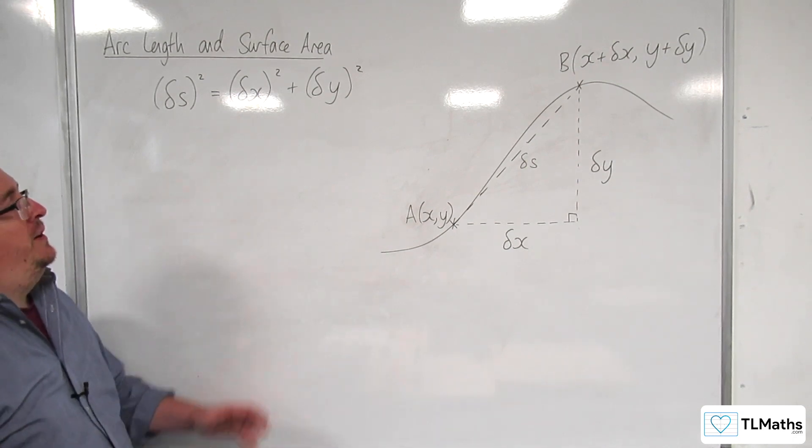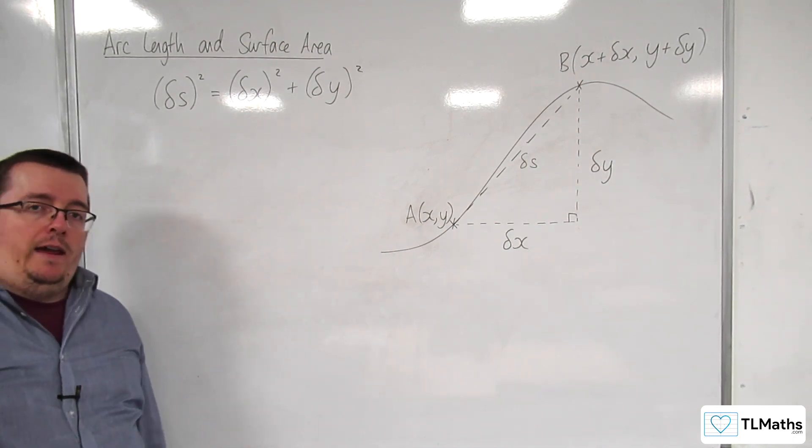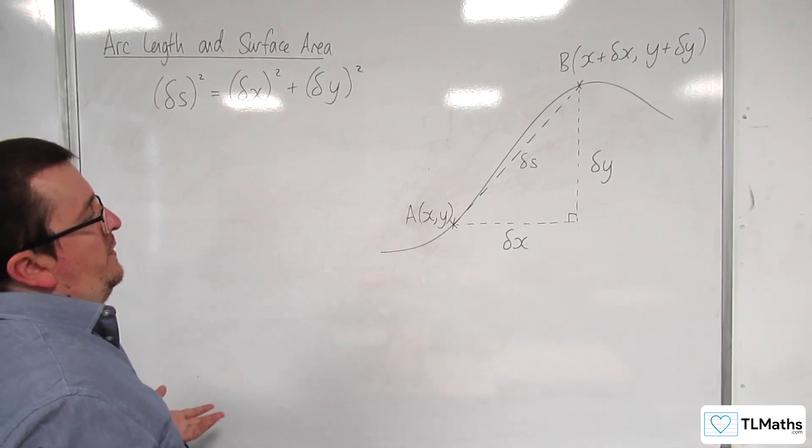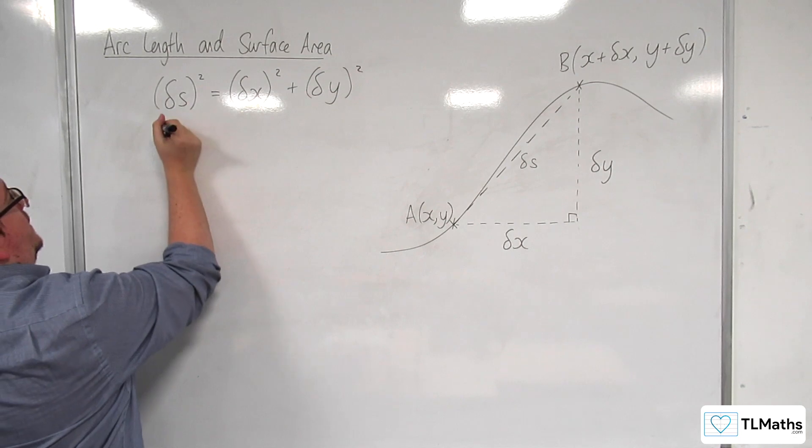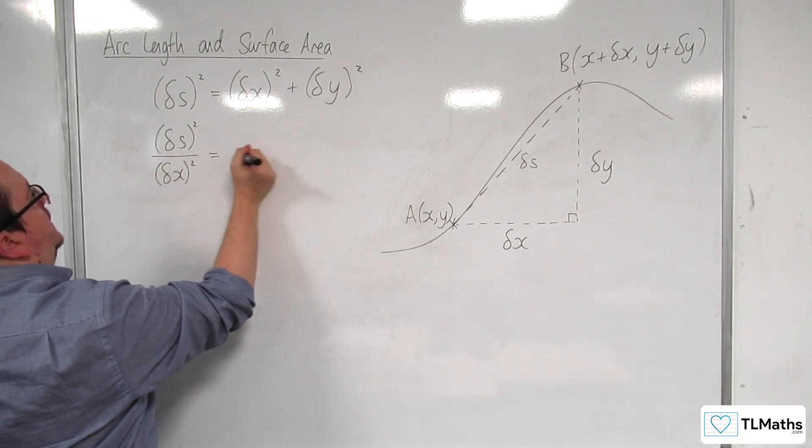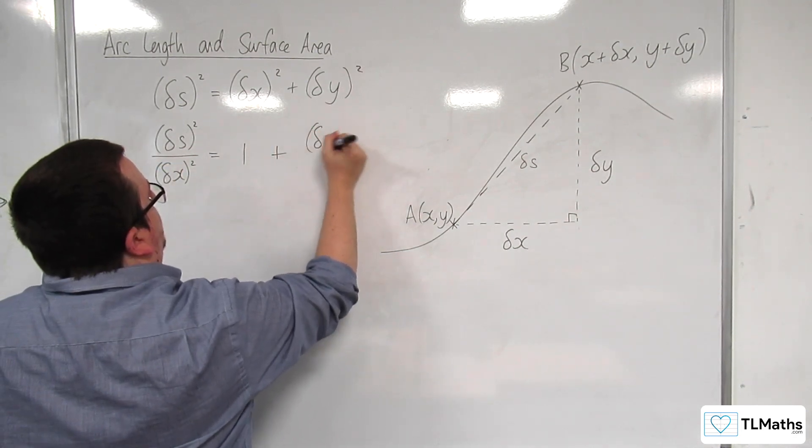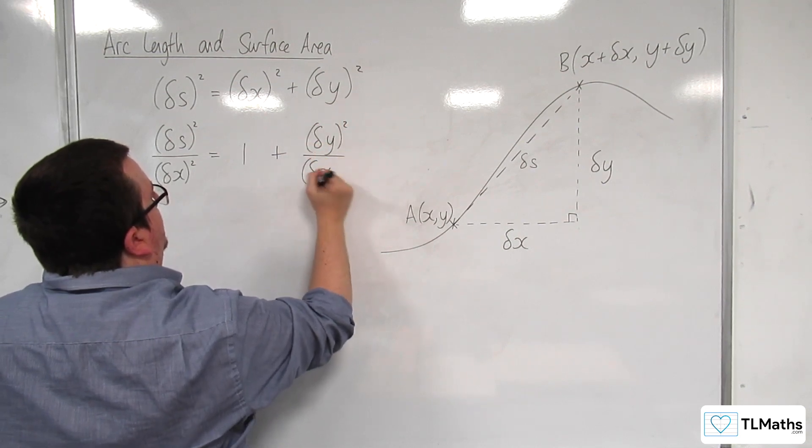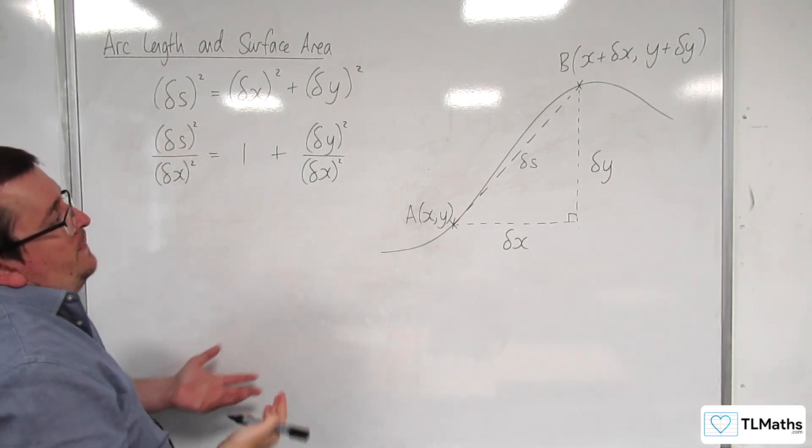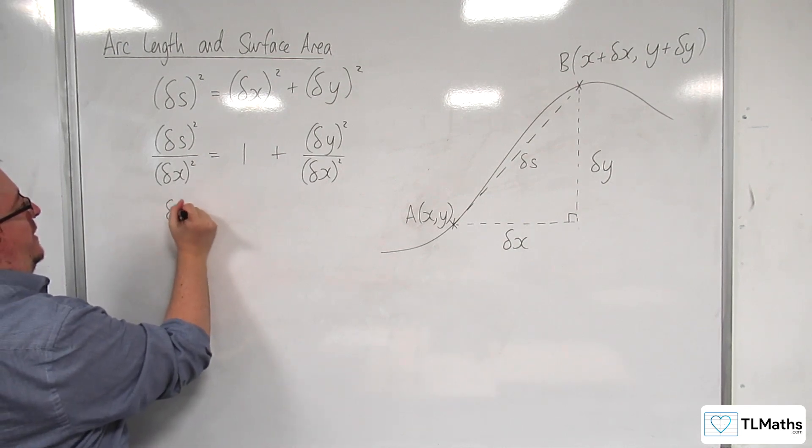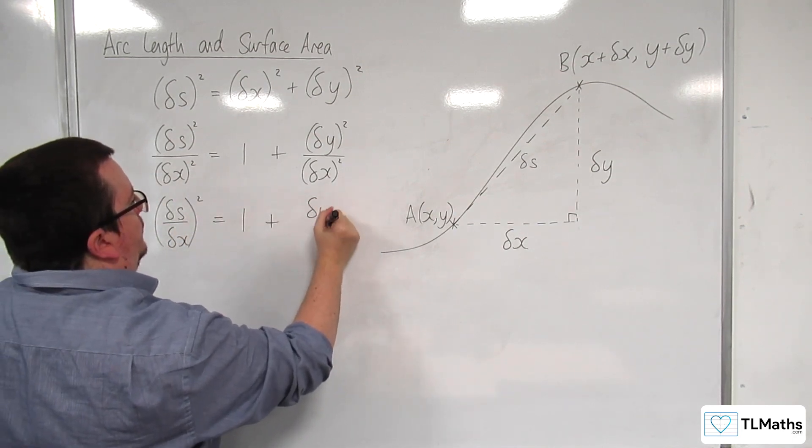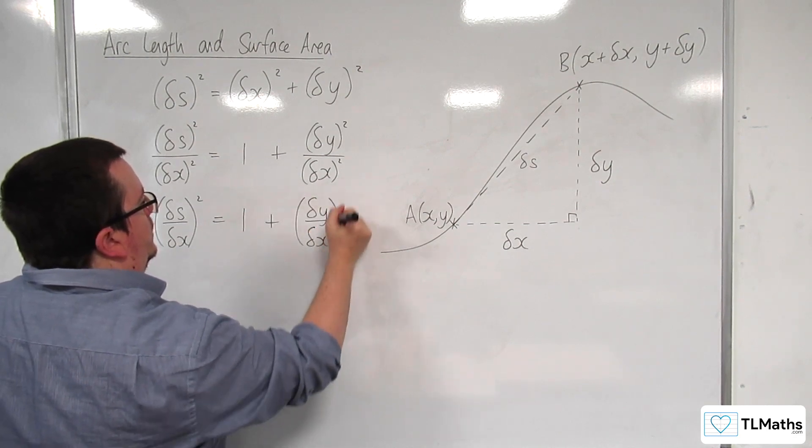Now what I'm going to do is I'm going to divide that through by delta x squared. Now remember these aren't dx's at this point, so this is just a length so it's perfectly fine to do that. I'm going to divide through by delta x squared and I'm going to get delta S all squared over delta x all squared is equal to 1 plus delta y all squared over delta x all squared.